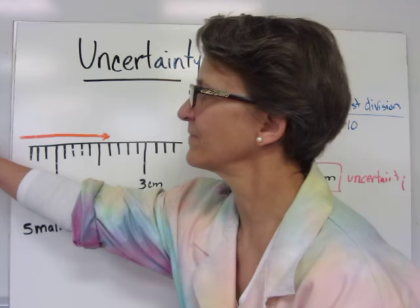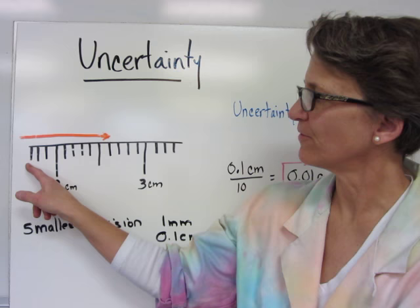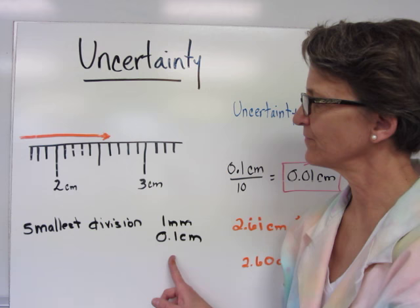Uncertainty in measurement. Every measurement has some uncertainty to it. In this example, I've reproduced a ruler, and each increment is one millimeter, which is the same as 0.1 centimeters.